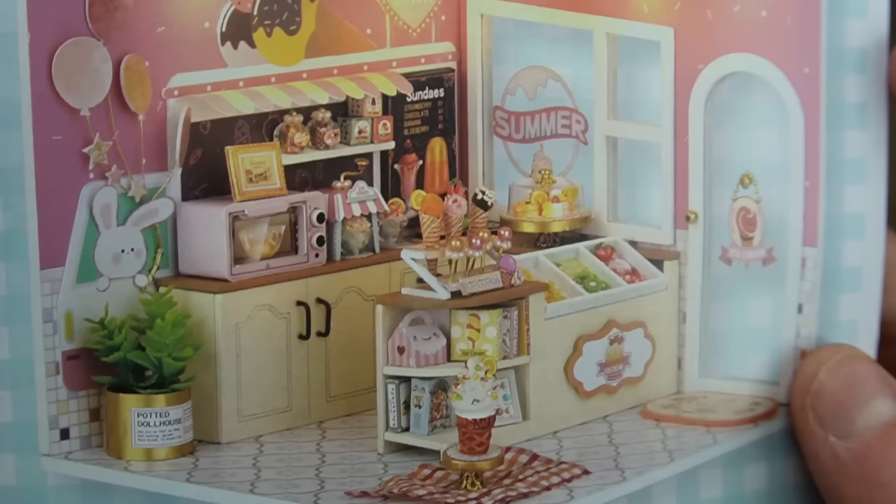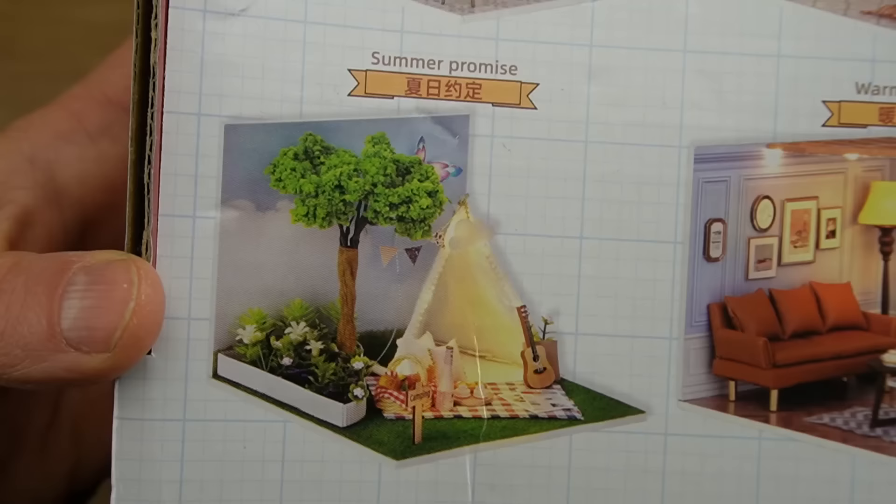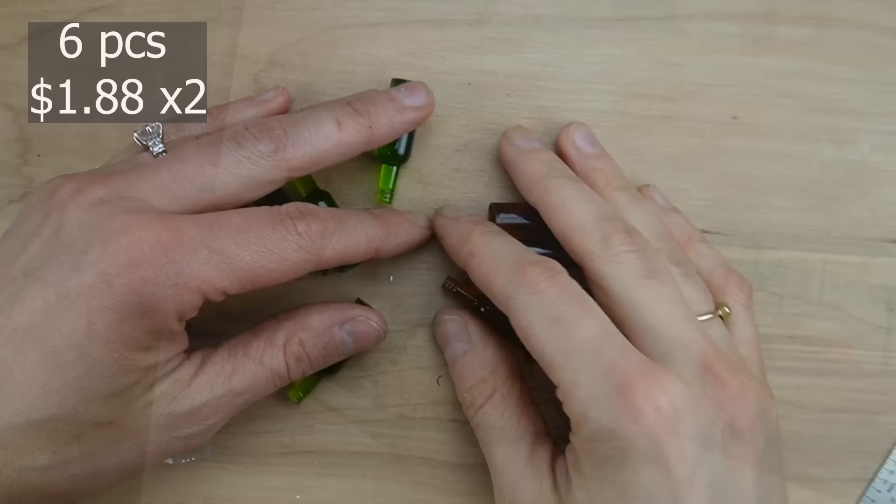Here's another kit that includes some tools and a dust cover. This is an ice cream shop themed kit. I didn't realize there were so many options for this same type of kit. I do think I chose the right one although this teepee is extremely cute.